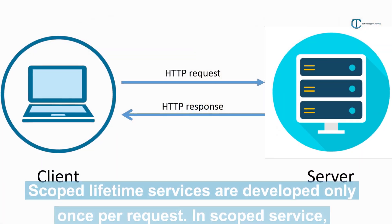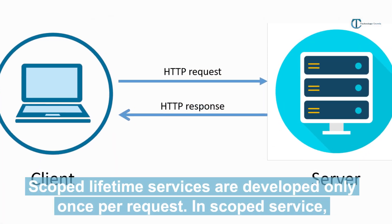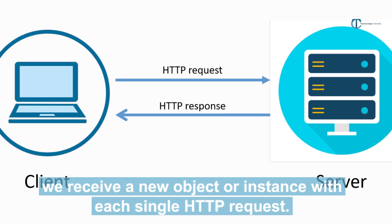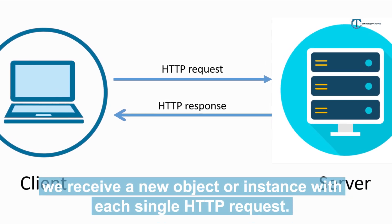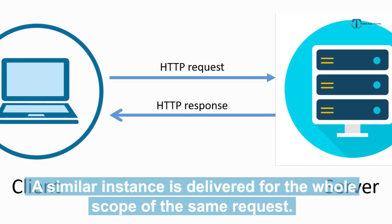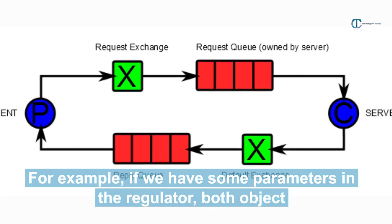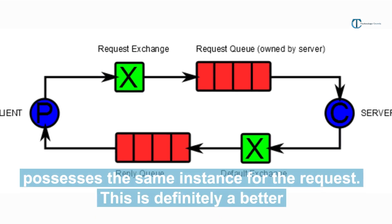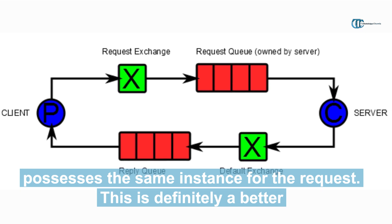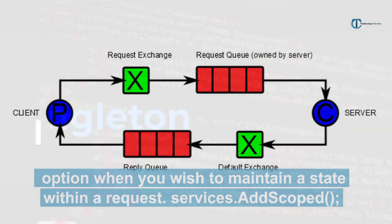1. Add scoped. Scoped lifetime services are developed only once per request. In scoped service, we receive a new object or instance with each single HTTP request. A similar instance is delivered for the whole scope of the same request. For example, if we have some parameters in the controller, both objects possess the same instance for the request. This is definitely a better option when you wish to maintain a state within a request.